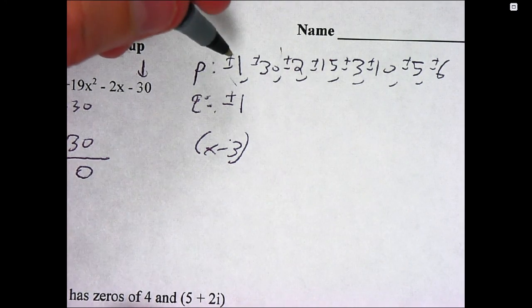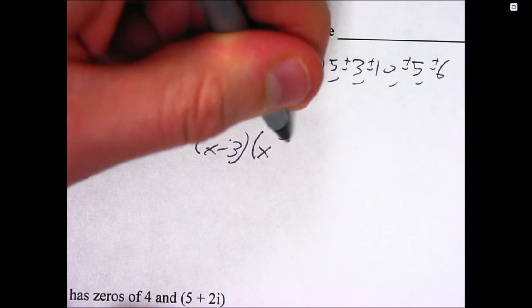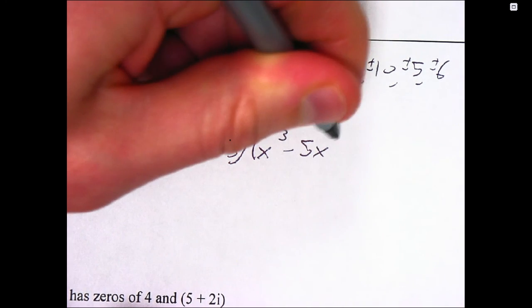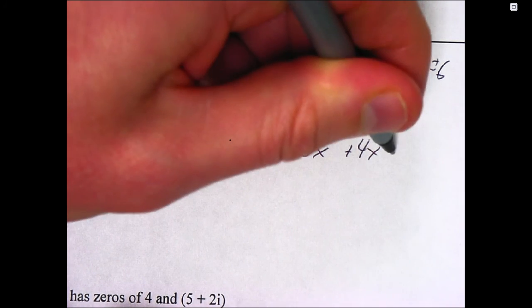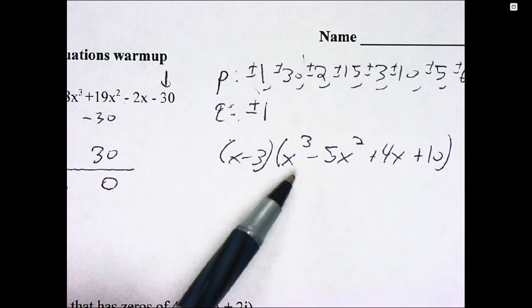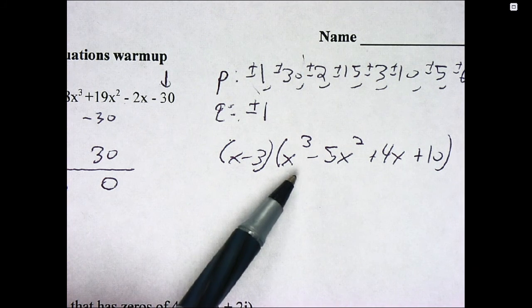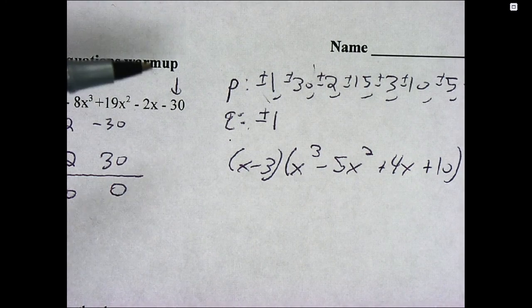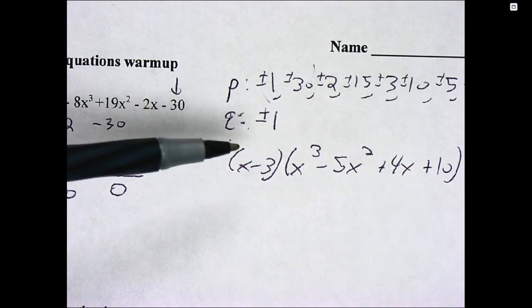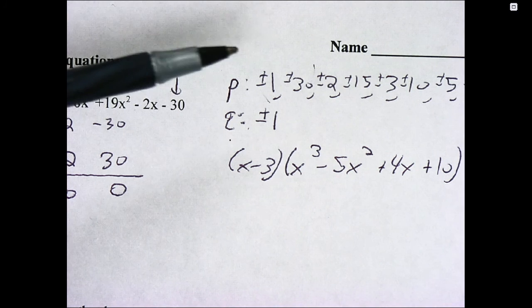And the other part, the quotient, is going to be 1 power lower. So x cubed minus 5x squared plus 4x plus 10. Well, unfortunately, x cubed is not something I can factor in my head or cannot use the quadratic formula. So I have to sort of approach this one now.